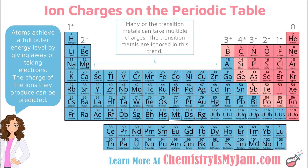This creates an important trend on the periodic table. All of the elements in group 1 tend to take a charge of plus 1 when they become an ion. Group 2 is plus 2, group 13 is plus 3, group 14 is plus or minus 4, group 15 is minus 3, group 16 is minus 2, group 17 is minus 1, and group 18 is zero. This is one of those huge trends on the periodic table that I strongly recommend you memorize.